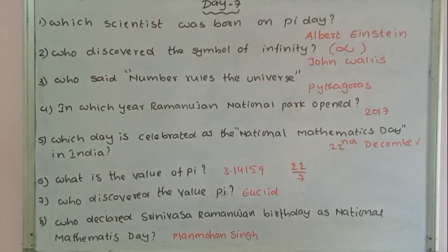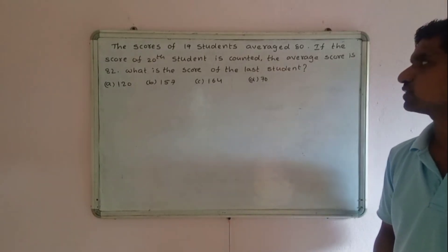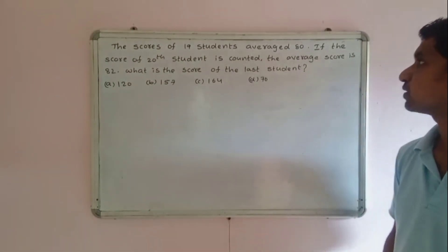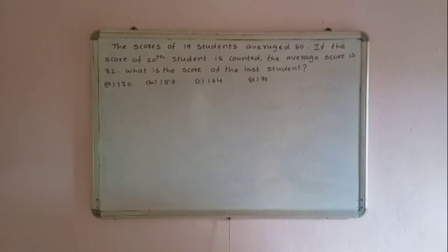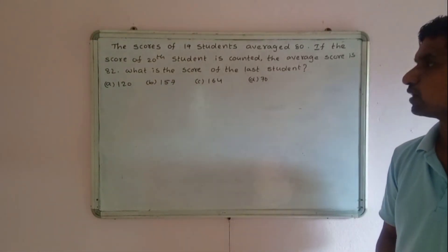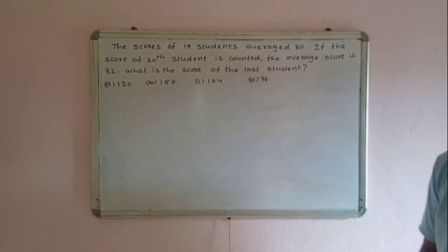The scores of 19 students have an average of 80. If the score of the 20th student is counted, the average score becomes 82. What is the score of the last student?